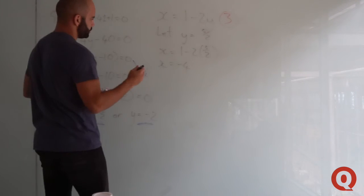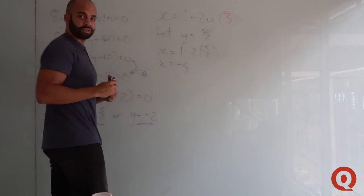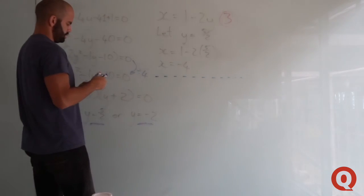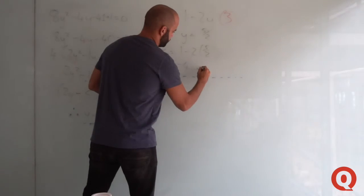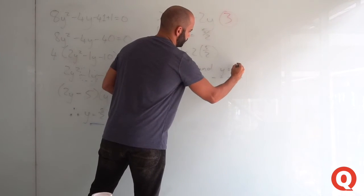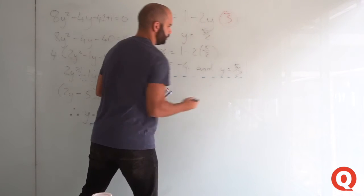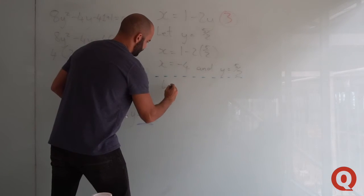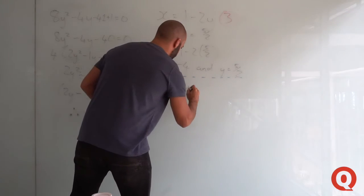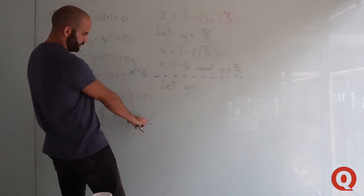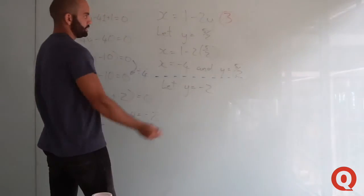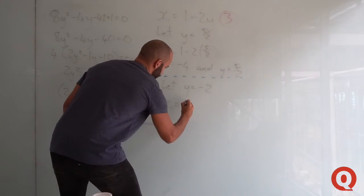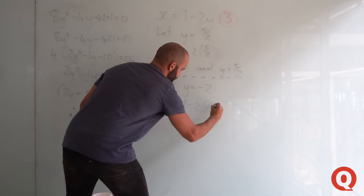For the second one, draw a dotted line to separate them. Let y equal the second result, which is minus 2. Substituting back into equation 3, x equals 1 minus 2 times minus 2.